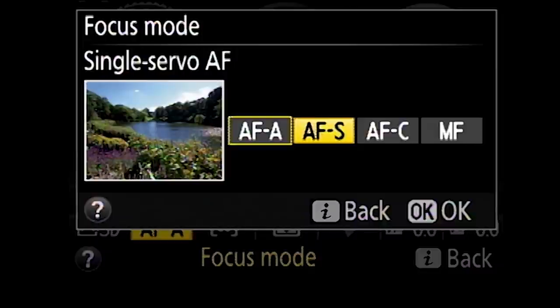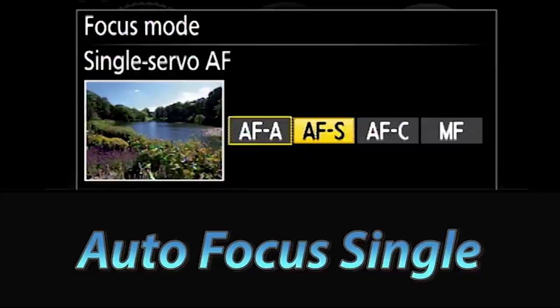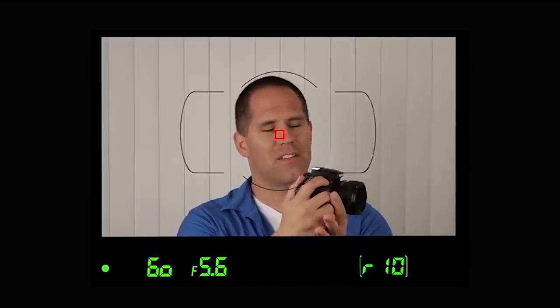The first one you should know about is AFS which stands for autofocus single. What this means is that when you push that shutter button halfway down and hold it, the camera is going to get a focus lock and it is going to stay fixed on that position as long as your index finger is pushing that shutter button halfway down. So even if you move the camera around, the focal distance will not change.